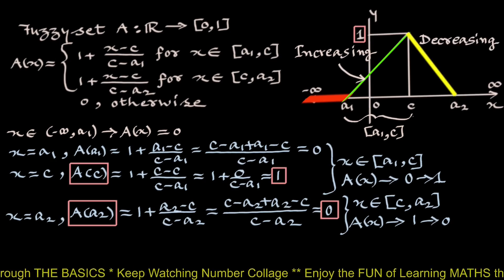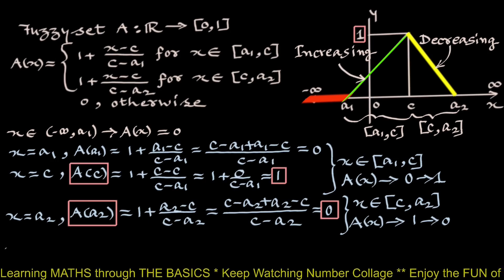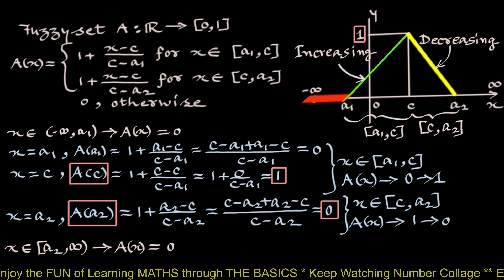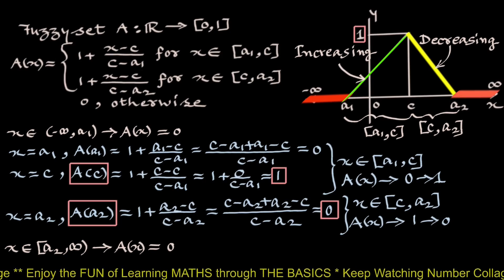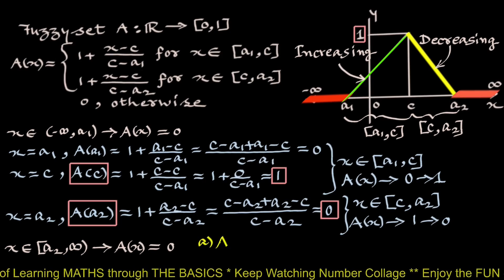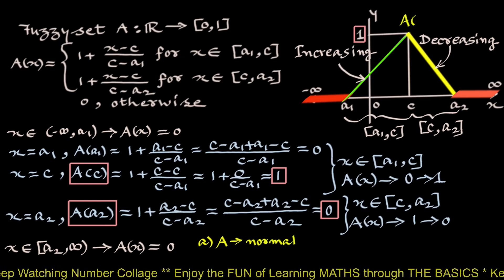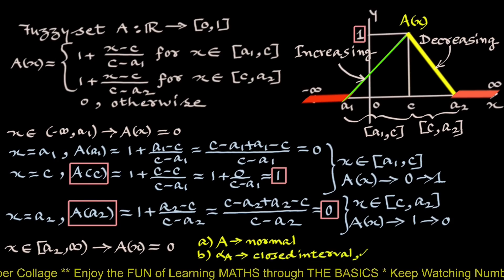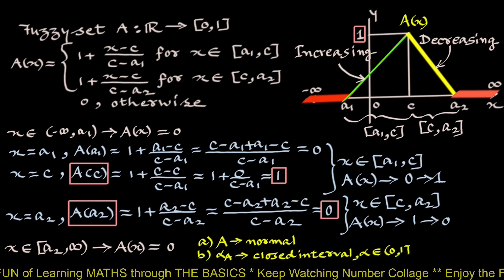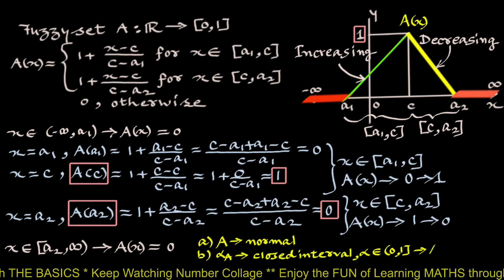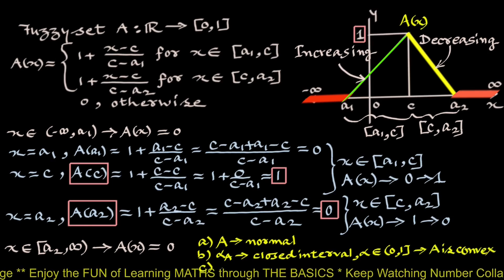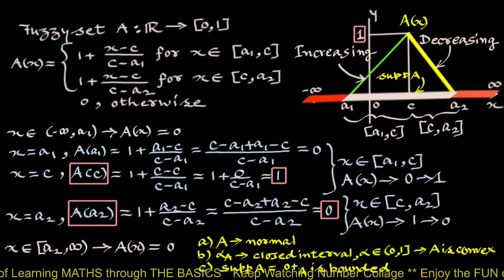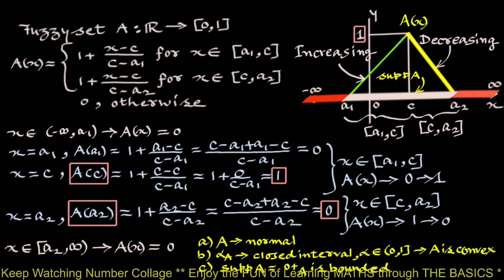For x between a2 and infinity, A(x) is 0 again. So all three conditions are satisfied here. First, set A is normal because A(c) equals 1. Second, the alpha-cut of A is a closed interval for alpha in (0, 1], meaning A is convex. Third, the support of A — the strong 0-cut — is bounded. Hence, this given fuzzy set is a fuzzy number.